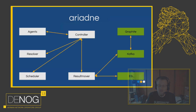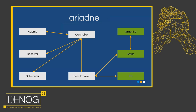Here's what the architecture looks like: there's a controller in the middle, agents that talk to the controller, and a resolver that also talks to the controller. The resolver's job is to find out where the agents actually are — agents just connect to the controller and don't know their own location — so the resolver determines which rack, which data center, and so on, enriches this information and sends it to the controller. There's also a scheduler which picks up the list of registered agents and builds a probing schedule, determining who should probe whom. A result mover component fetches the results from the controller and pushes them to the processing pipeline.